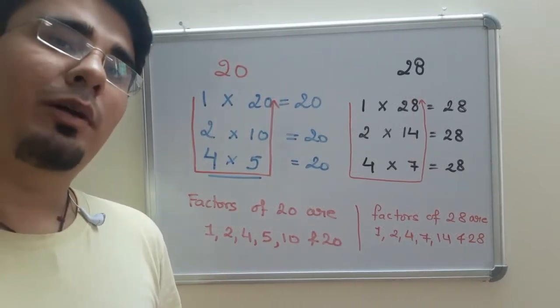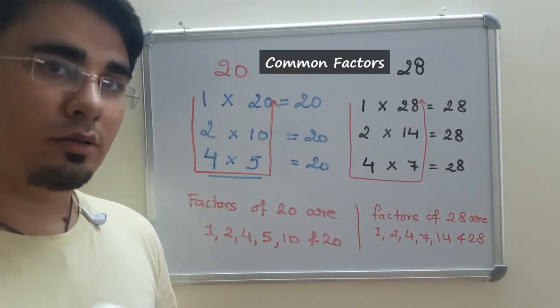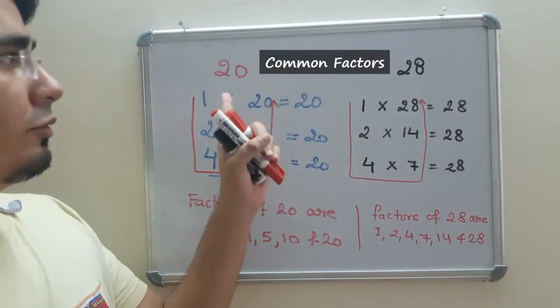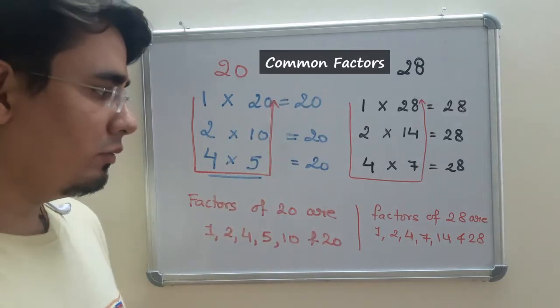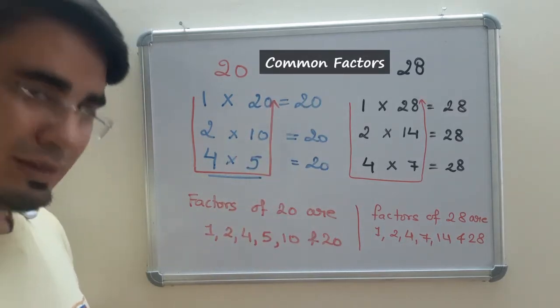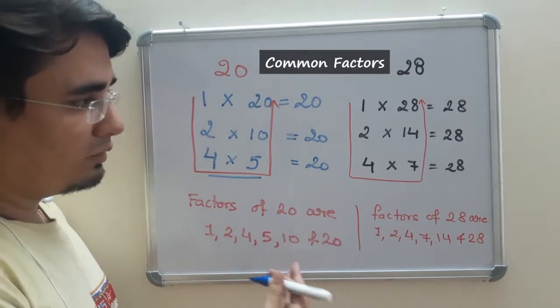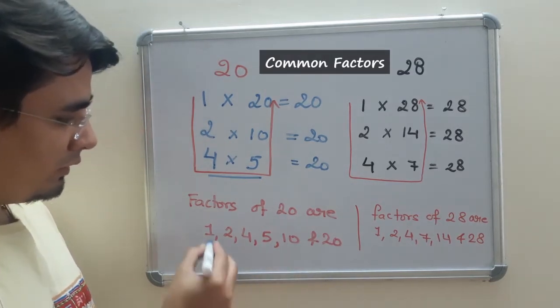Coming to our next topic which is finding common factors. Common factors of 20 and 28, we can find it two ways. One is finding the common one. Obviously that's easy.